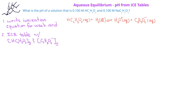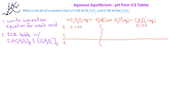Now that we have the ICE table, we can begin by putting in the initial concentrations. We'll ignore the concentration of water since it's in the liquid phase. The initial concentration of acetic acid is 0.100 molar. In previous ICE table examples, we assumed the hydronium ion and acetate ion concentrations were 0 because the acetic acid had not ionized yet. However, in this buffer situation, the acetate ion is present from the sodium acetate, so its initial concentration is 0.100 molar, since all of the sodium acetate ionizes. The hydronium concentration is still 0.